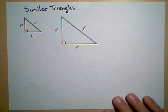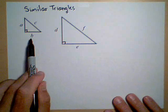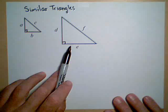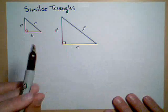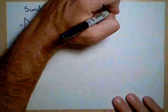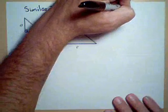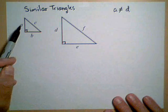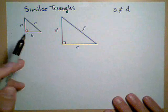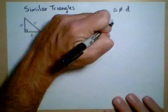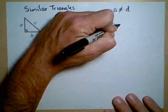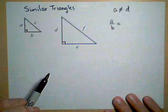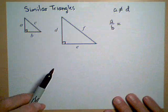What that means is if we have two similar triangles, they don't have to be the same size. So for instance, in these two triangles, side A does not equal side D. They are not the same size. But if I take the ratio of two sides in our smaller triangle, say A to B, that will be equal to the ratio of the corresponding sides in the bigger triangle.